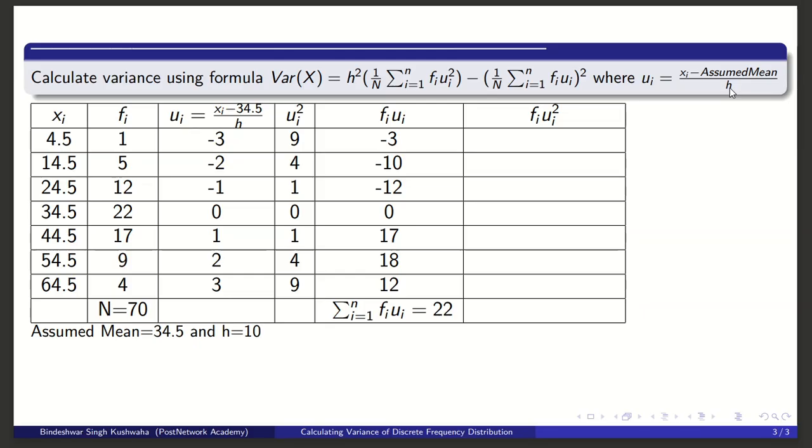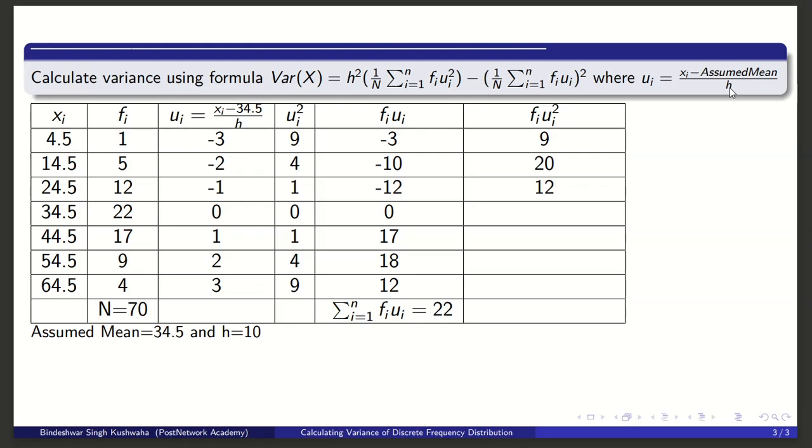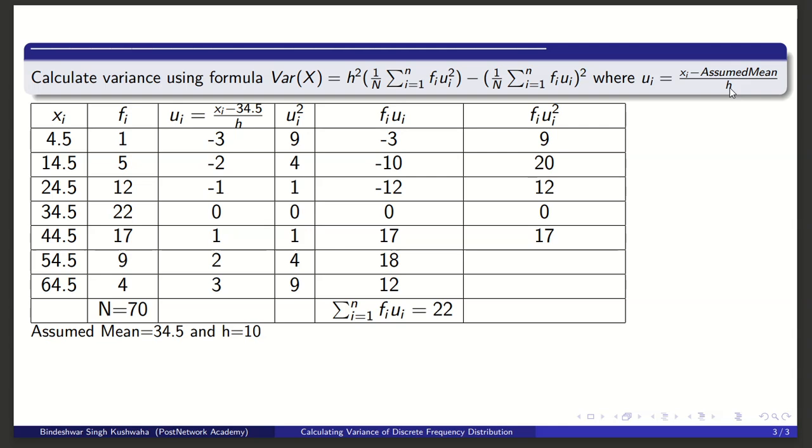In the last column, you will calculate fi times ui². So the values are 9, 20, 12, 0, 17 - because fi is 17 and ui² is 1, that is 17. You can see that fi is 9 and ui is 2, and ui² is 4.